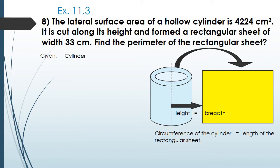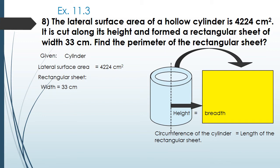Given information: for the cylinder, the lateral surface area is 4224 centimeters square. For the rectangular sheet, the width (breadth) is 33 centimeters.